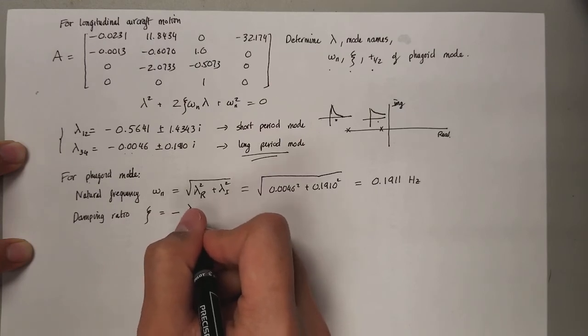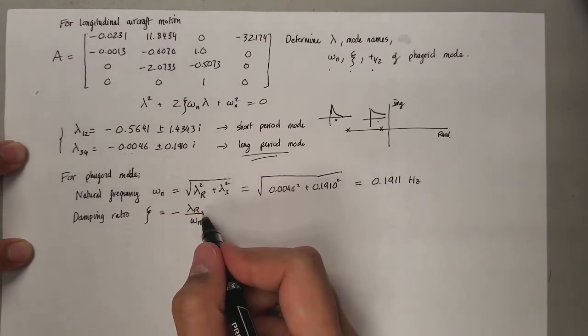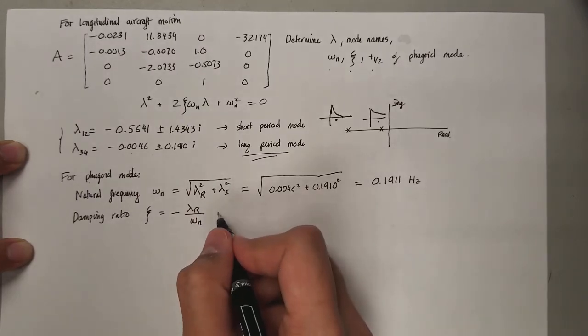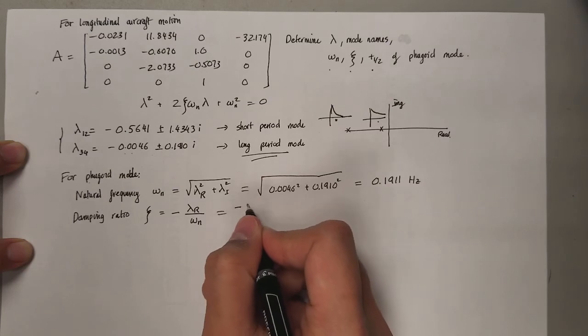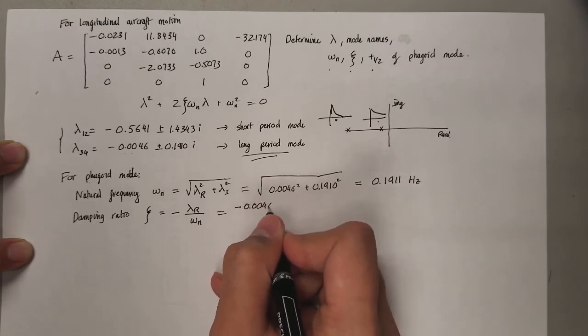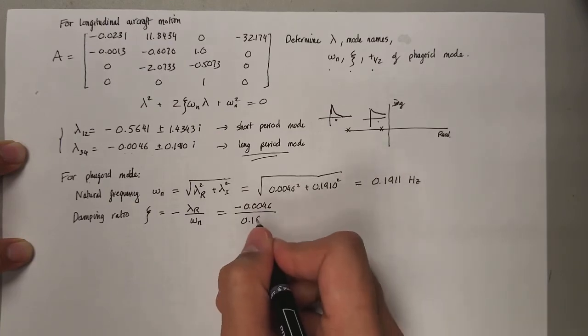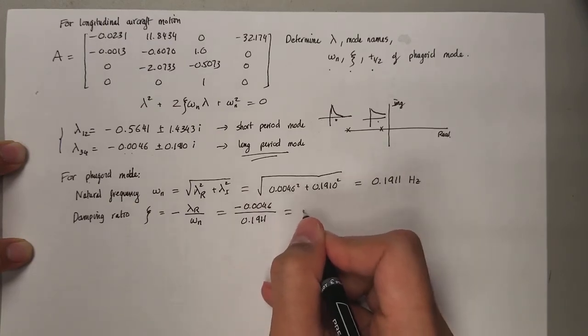The damping ratio is going to be the real component of the eigenvalues divided by the natural frequency by definition. That's going to be negative 0.0046 divided by what you just got right there, that's going to turn out to be 0.0241.